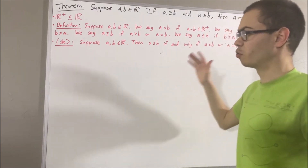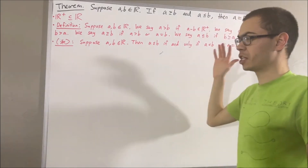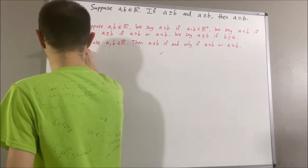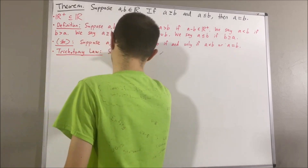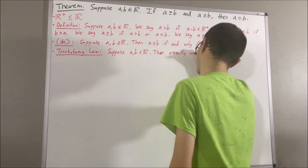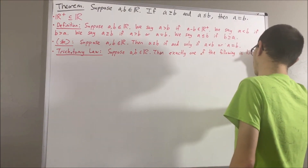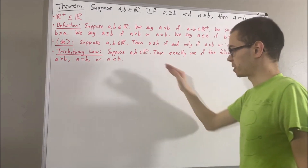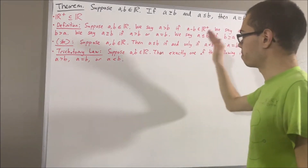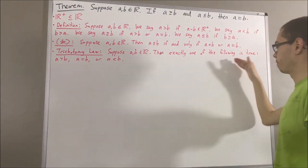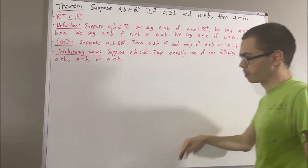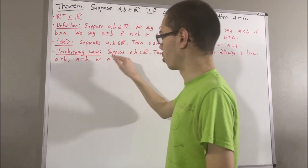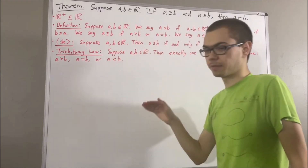Now, at this point, we have proven the trichotomy law, which says the following. Suppose a and b are real numbers. Then exactly one of the following is true: a is greater than b, a equals b, or a is less than b.